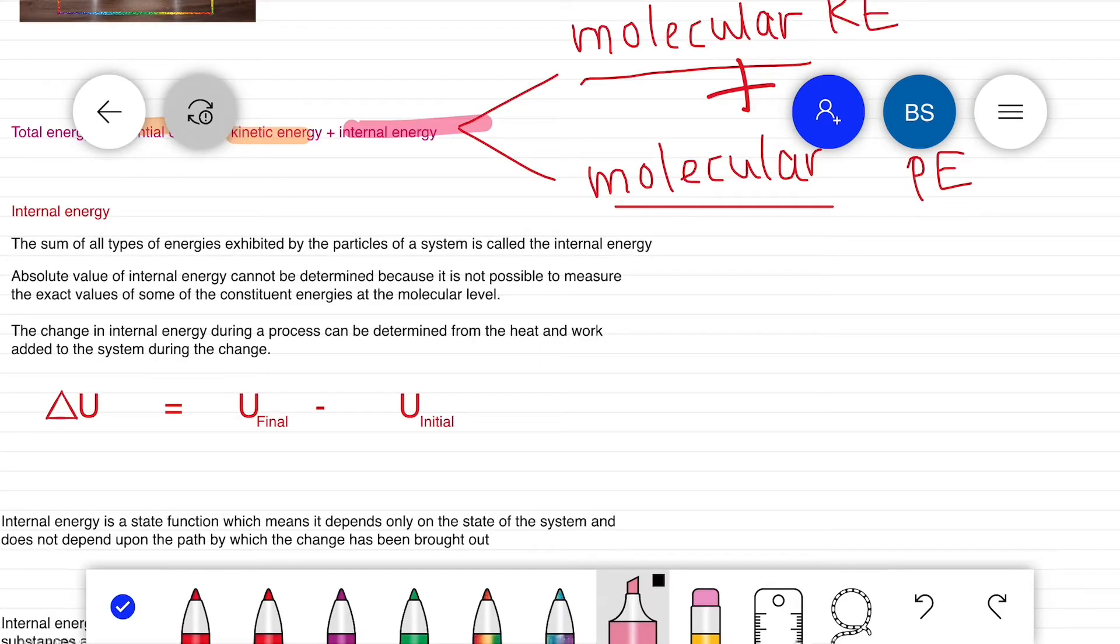So we can define internal energy as the sum of all types of energies exhibited by the particles of a system is called the internal energy. Internal energy's absolute value cannot be determined because the exact energy value cannot be calculated.